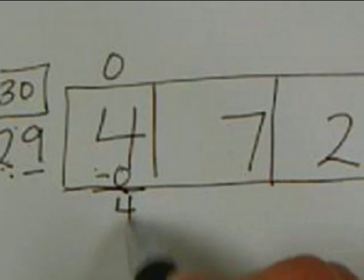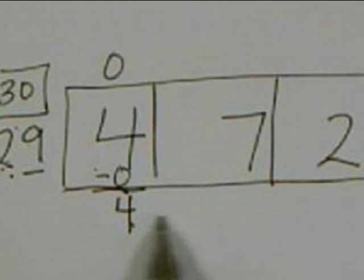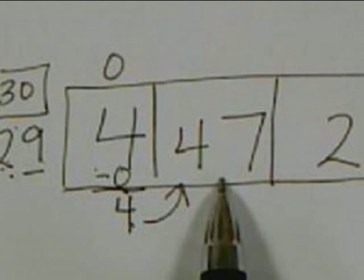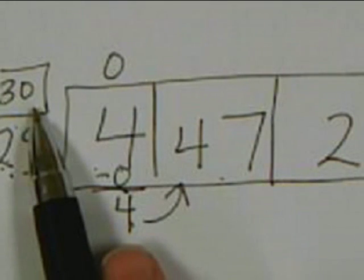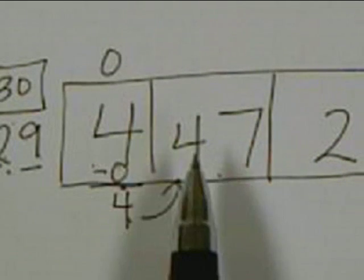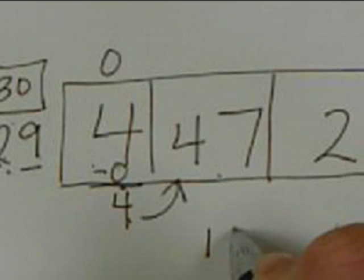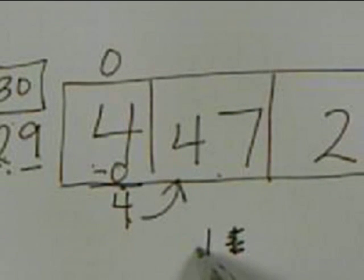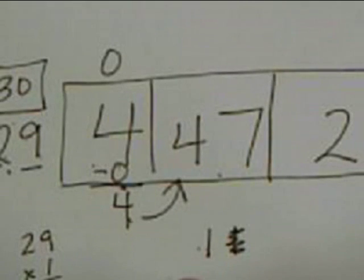4 is less than 29, so we're good to move the 4 to the next box. In the next box is 47. We're going to use 30 and count by 30s to see how close we can get without going over: 30, 60 — 60 is too far, it's bigger than 47. So the only thing we can try is 29 times 1 to get close.